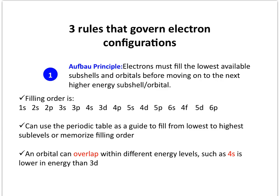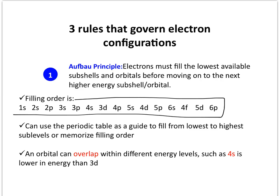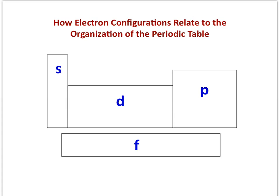You can use the periodic table as a guide to fill from the lowest to the highest sub-levels, or you can memorize the filling order. Orbitals can overlap between different energy levels — you'll see this at 4s and 3d, 5s and 4d, 6s, 4f, 5d, and so forth. If you're using the periodic table to help with electron configuration, remember your blocks: S, P, D, and F.